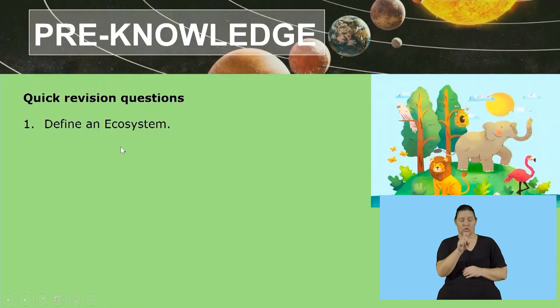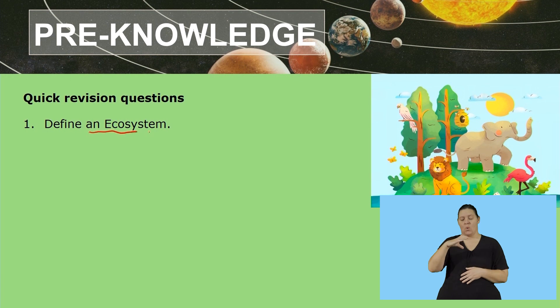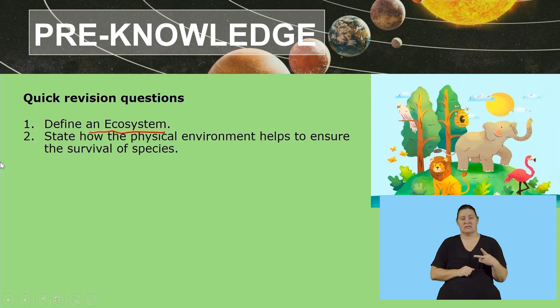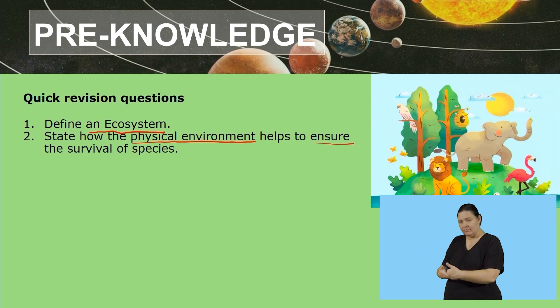So we are going to move on to a quick revision activity. Our first question would be to define an ecosystem — you are going to have to define the term ecosystem. And then secondly, you are going to state how the physical environment helps to ensure the survival of species.